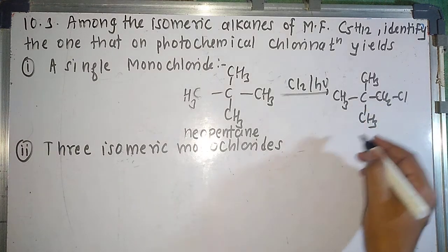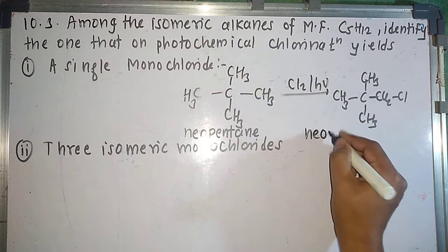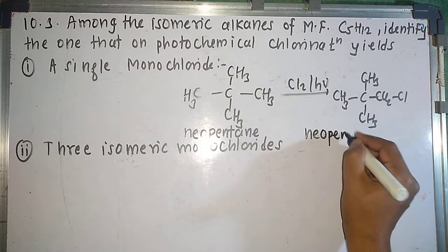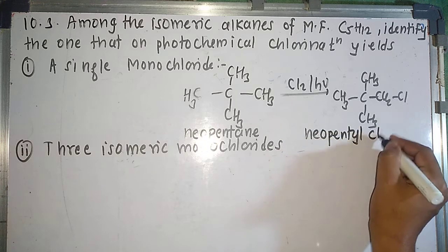I can replace any hydrogen from any carbon atom and I will get the same product — a single monochloride product. This compound is neopentane, also known as 2,2-dimethylpropane. The product of the chlorination reaction is neopentyl chloride. So neopentane on photochemical chlorination gives only one monochloride, which is neopentyl chloride.